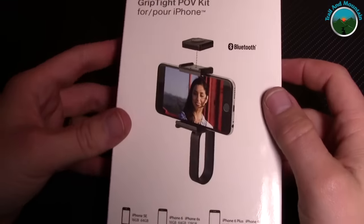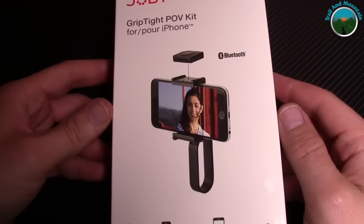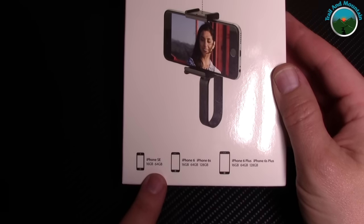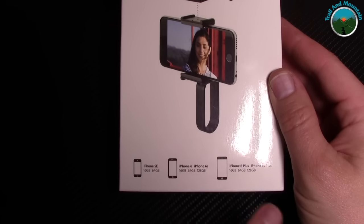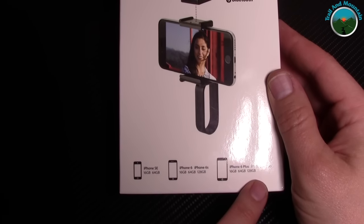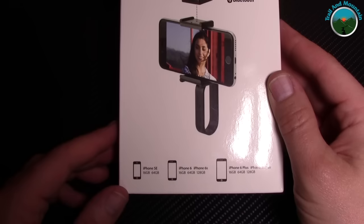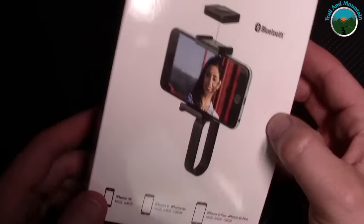So I'm going to get it out of the box, I'm going to move my camera around so you can see what I'm doing. I'll show you why this thing is so cool. Here it is right here, GripTight POV kit for your iPhone, specifically designed for the iPhone SE, iPhone 6 and 6S, and iPhone 6 Plus and 6S Plus.